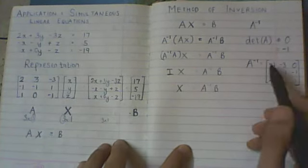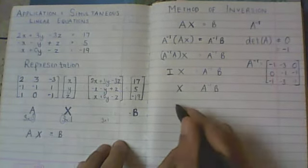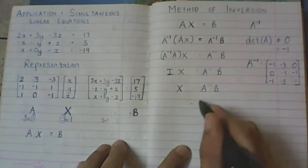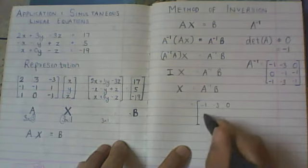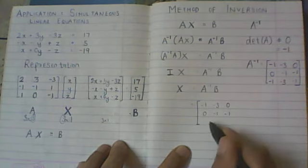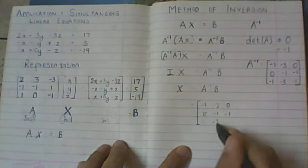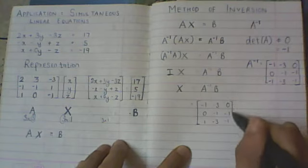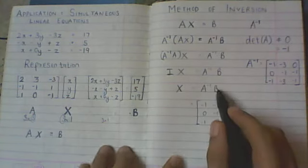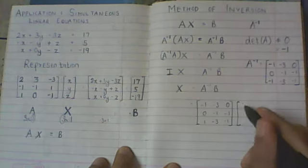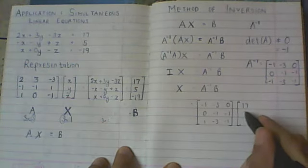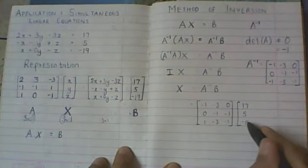So what you can do is you can simply plug it in here. So I can plug it in here saying that this is the A inverse matrix: minus 1, minus 3, 0, 0, minus 1, minus 1, minus 1, minus 3, minus 1. And I know what the B matrix is, it is nothing but the RHS values. So it is nothing but these entries: 17, 5, minus 19.